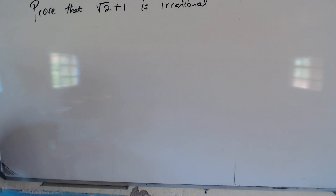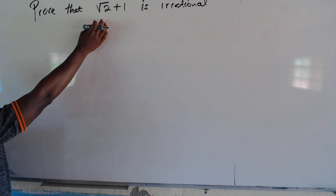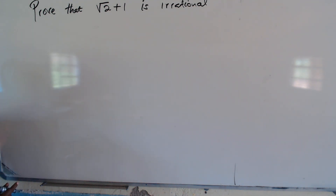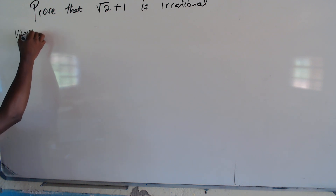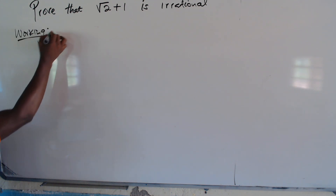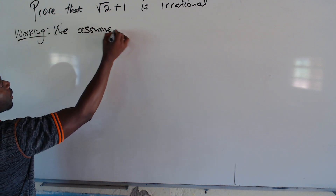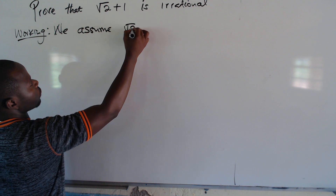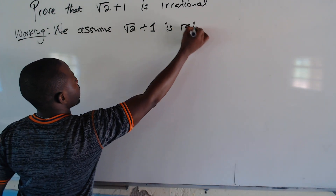Here we are proving that square root of 2 plus 1 is irrational. To do that, we are supposed to make an assumption that square root of 2 plus 1 is rational. So we assume that square root of 2 plus 1 is rational.